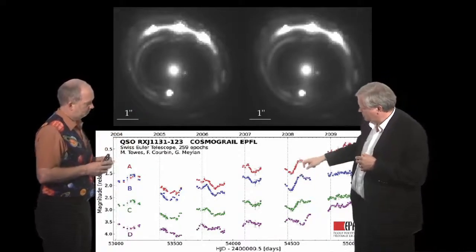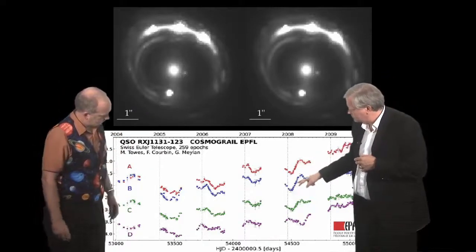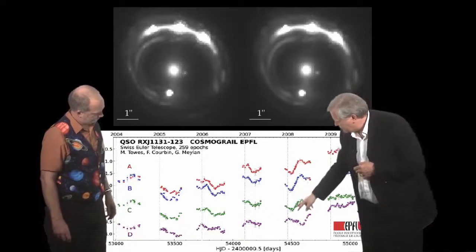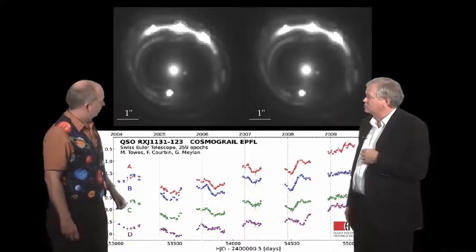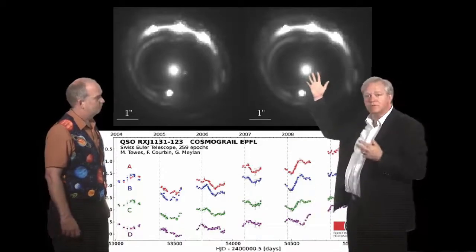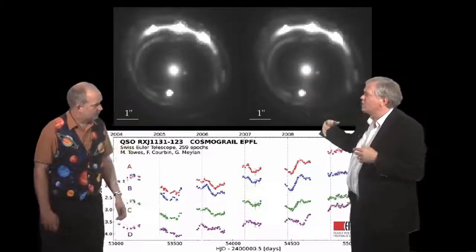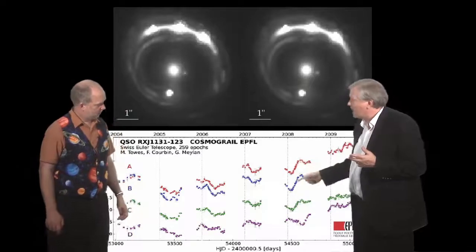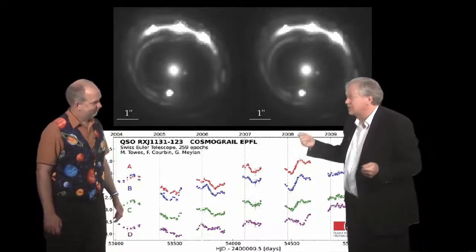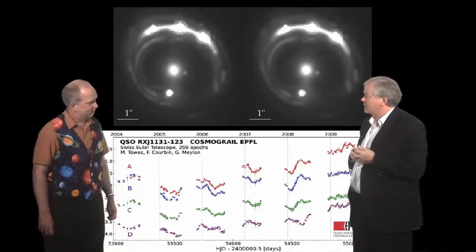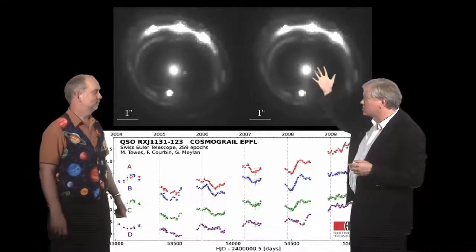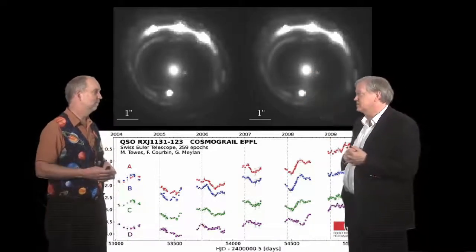So let's look at this little thing that's in A. It happens just a little bit later in B. It happens a bit later in C and a lot later in D. So that allows you to go through and take this model of the mass, which tells you how much stuff is there. And this time tells you times the speed of light, the actual physical distance of the system. And so that allows you to literally geometrically measure the distance to these objects.